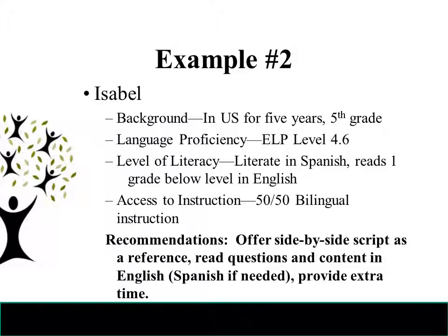Example two: Isabelle. Isabelle has been in the United States for five years and is now in fifth grade. Her English language proficiency is level 4.6, she is literate in Spanish, reads one grade level below in English, and is in a 50% English / 50% Spanish bilingual program. Recommendations for Isabelle may include offering a side-by-side script as a reference, reading questions and content in English with clarification in Spanish if needed, and providing extra time.